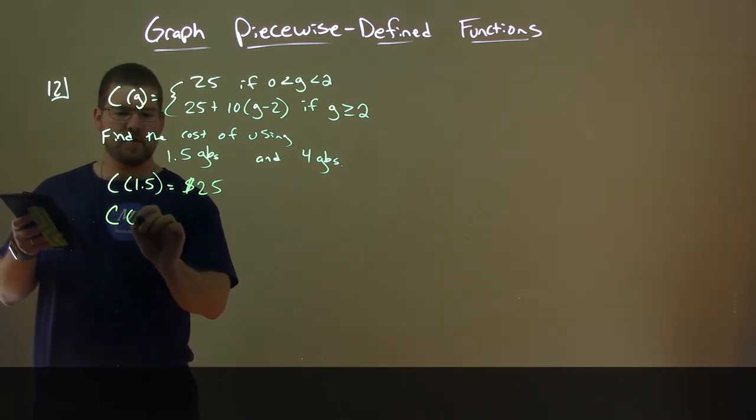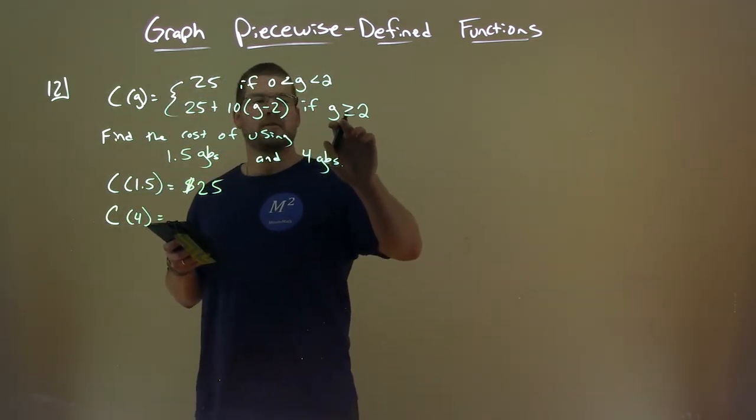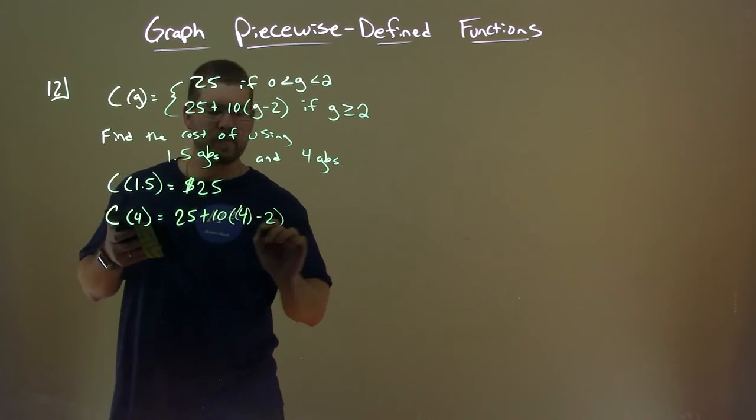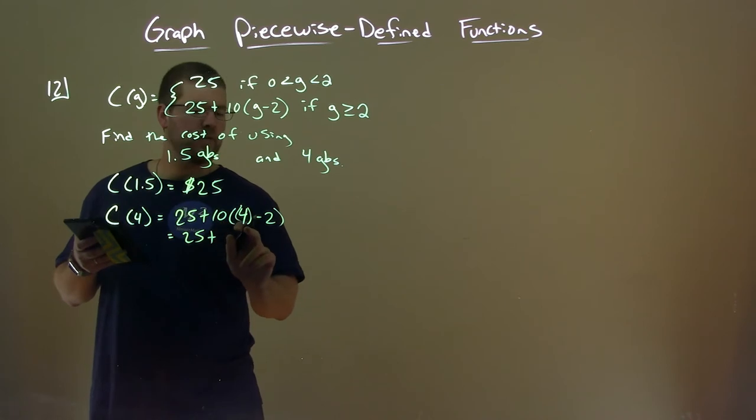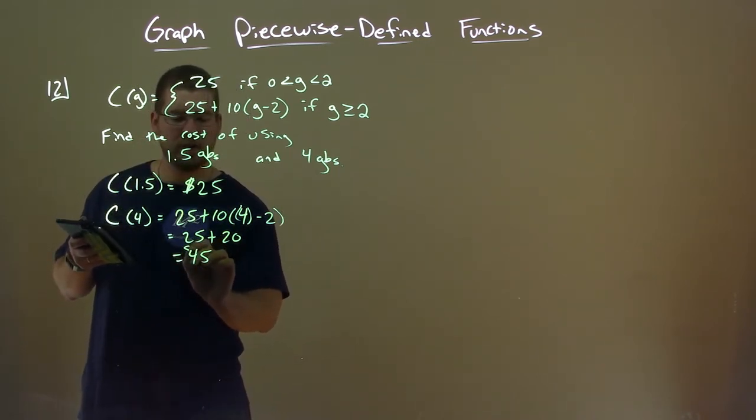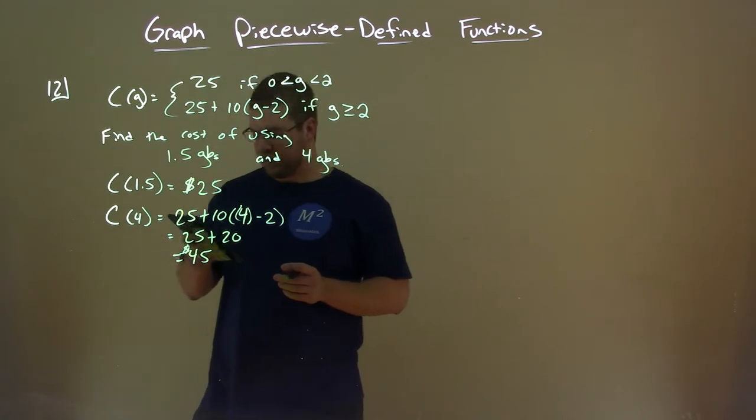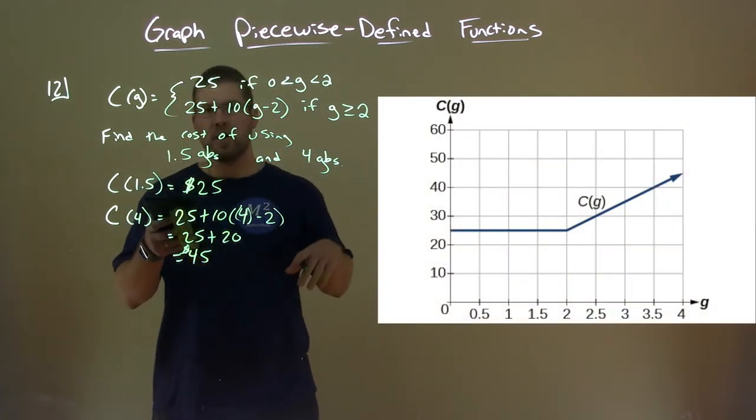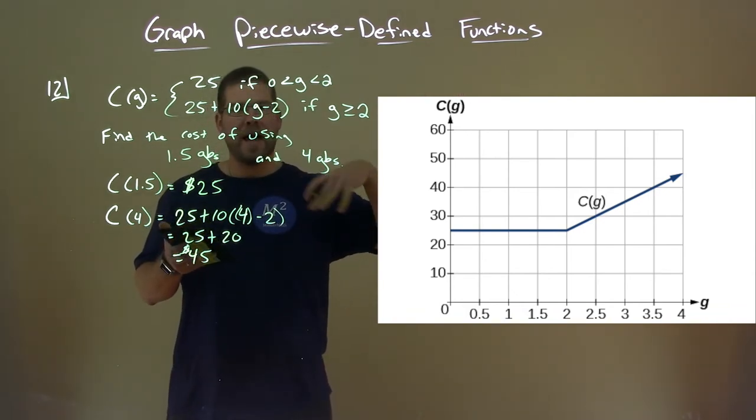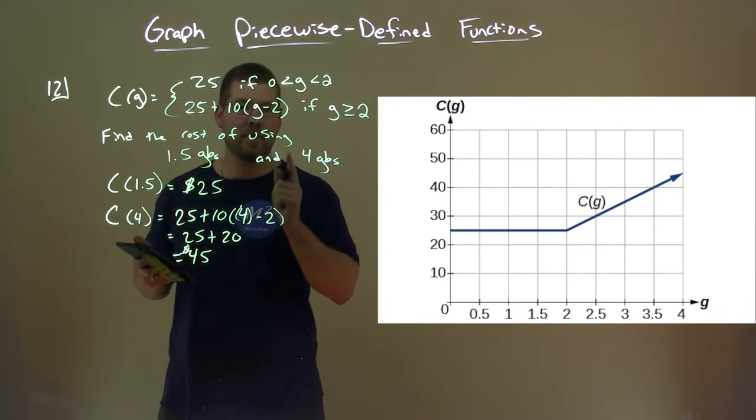All right. Now we want to find 4 gigabytes, so the cost of using 4 gigabytes of data. 4 is in the domain here of the second part of the piecewise function. It's greater than or equal to 2, so we have to use that part. So we have 25 plus 10 times 4 minus 2, and now we simplify. 25 plus 4 minus 2 is 2 times 10, which is 20, and 25 plus 20 is $45. So if we use 4 gigabytes of data transfer, it would cost us $45. So we can see a graph here that represents that piecewise function. Notice it's linear straight across for $25 until we hit 2 gigabytes of data, then the prices start going up as we keep using more and more data transfer.